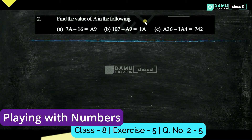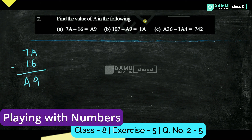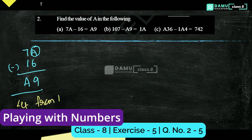Our next question: find the value of A. For 7A minus 16, you should get A9. So 9 should come, meaning what A should be. From 15 minus 6 you get 9, so A will be 5.